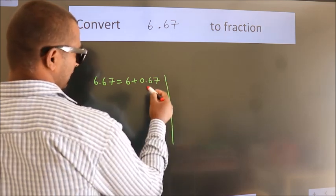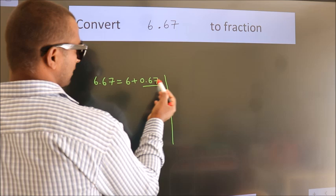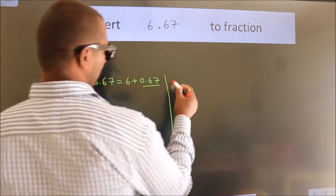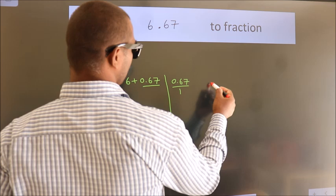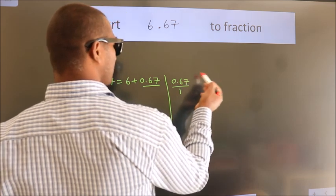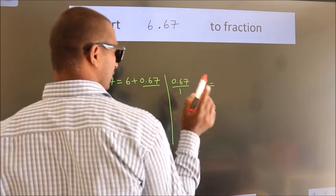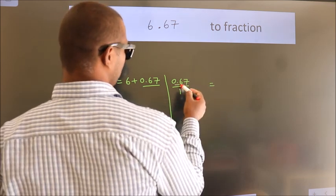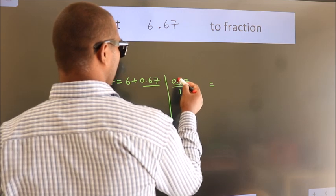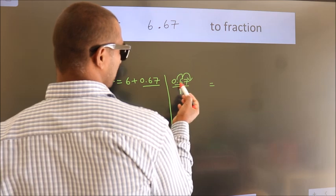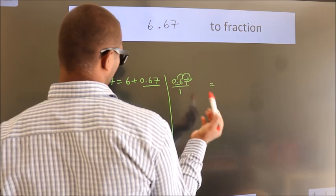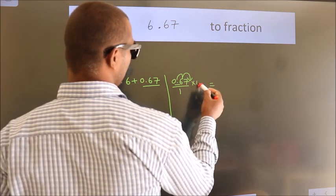Next convert this to fraction. So 0.67. To convert this to fraction, we have to move this decimal after 2 numbers. For that multiply it with 100.